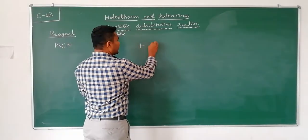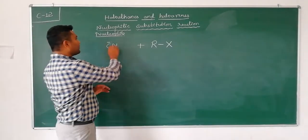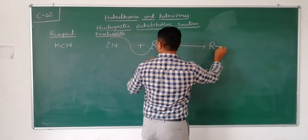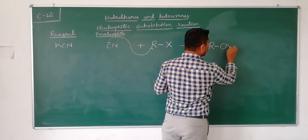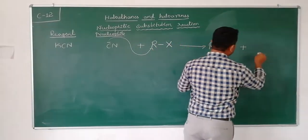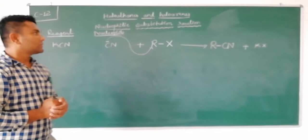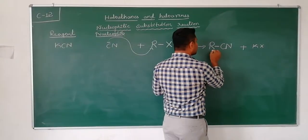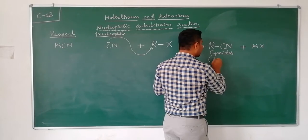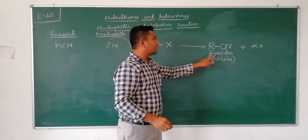When this cyanide ion attacks the alkyl group in RX, you will get R–C≡N as the product, plus KX as the byproduct. Such compounds are called cyanides, or they are also called nitriles.